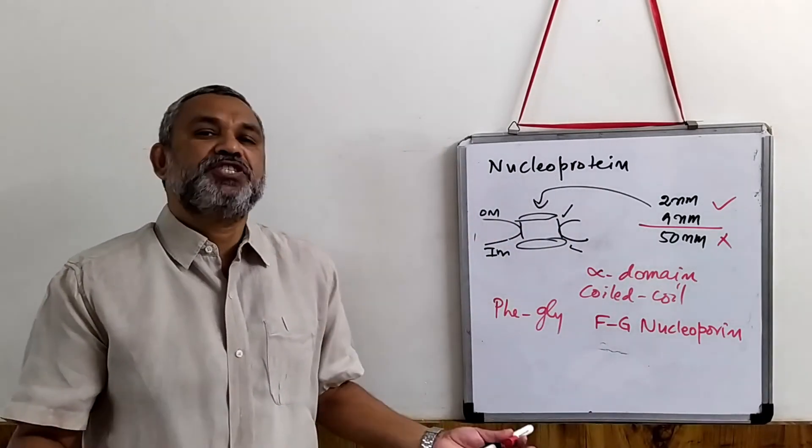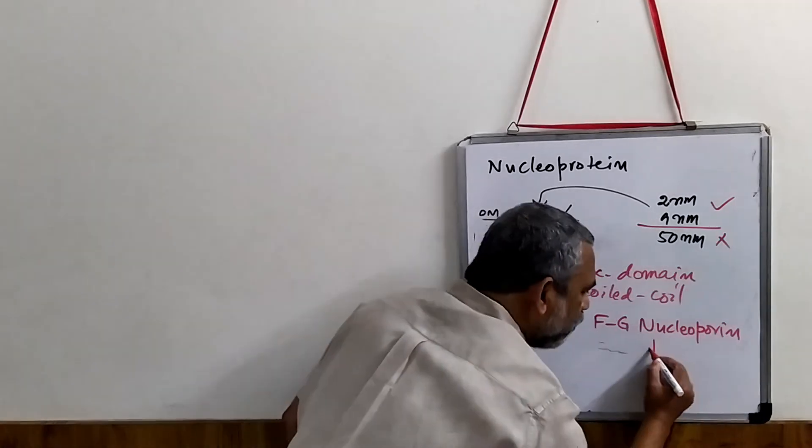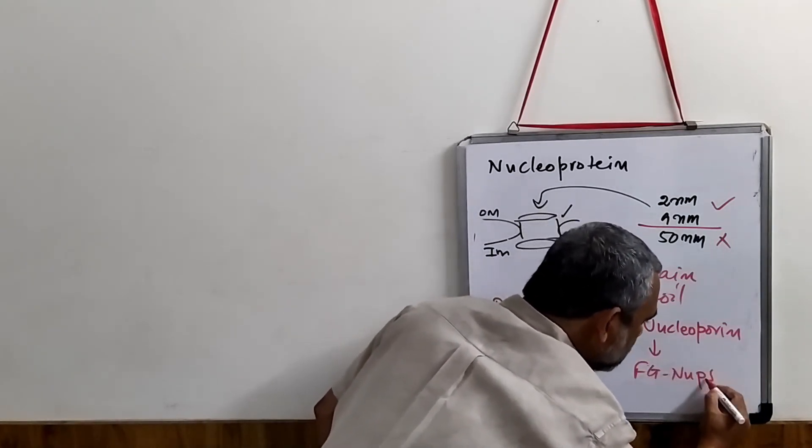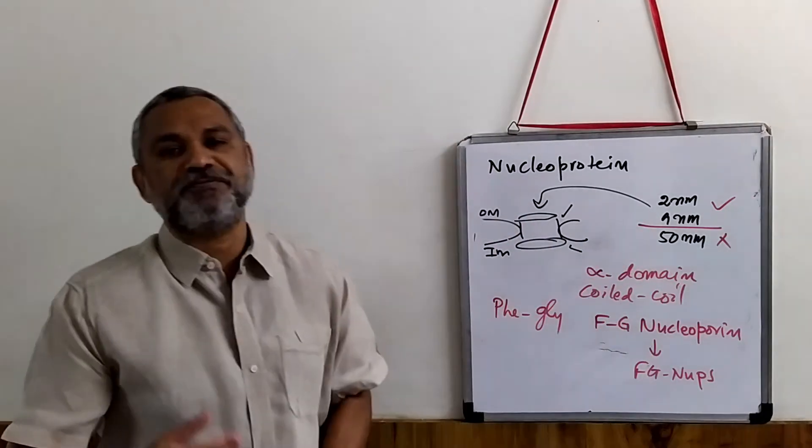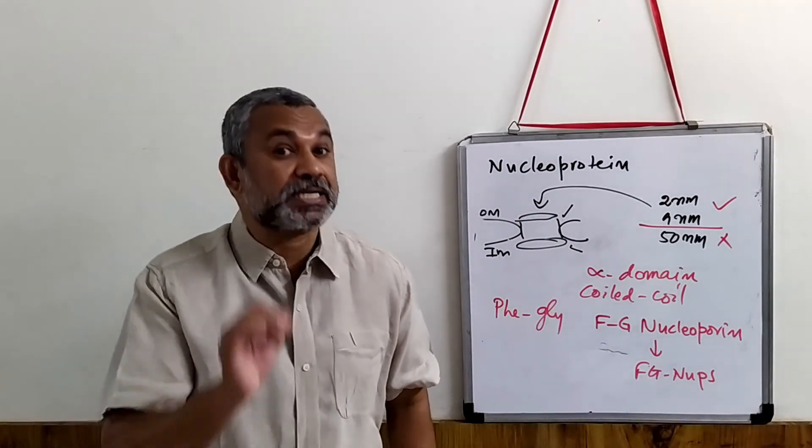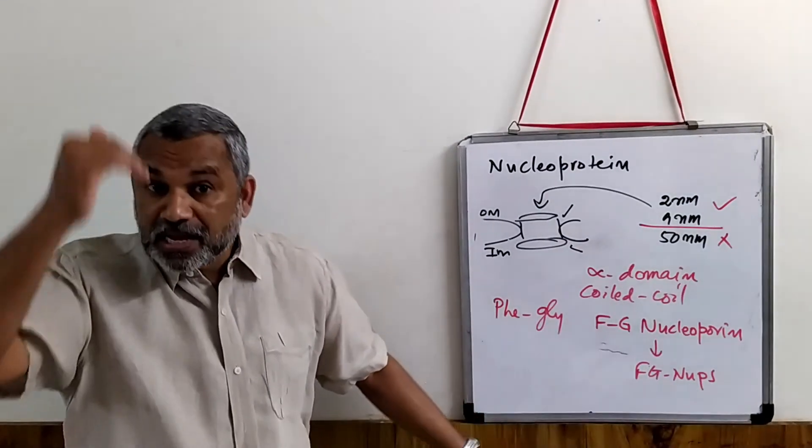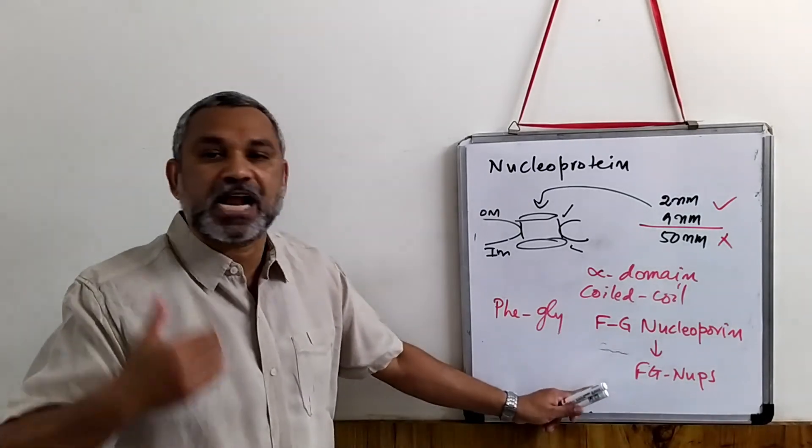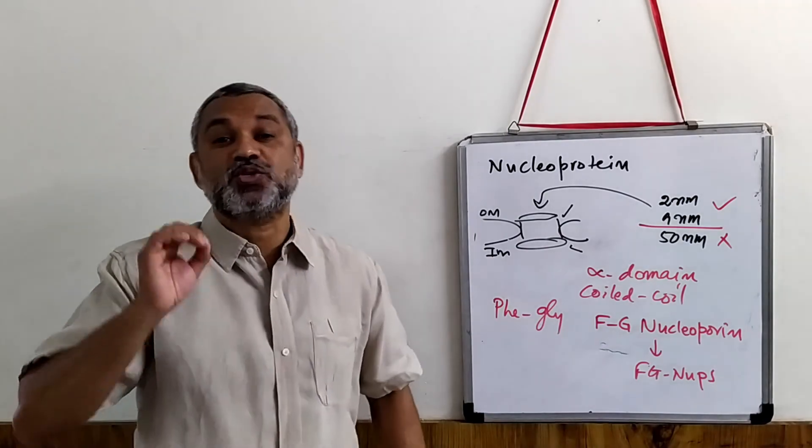FG nucleoporins—the short form you will find in many books. This repetition, phenylalanine we know is denoted as F, glycine is denoted as G. These FG nucleoporins keep track of it—these are very important for allowing molecules to transport. The kind of theories that are proposed about the transportation of molecules where these FG nucleoporins are so essential.